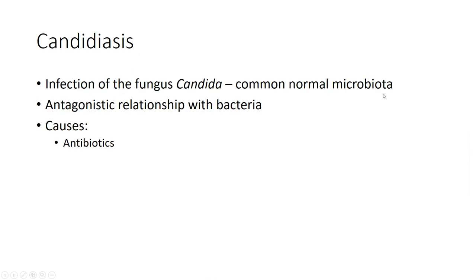Moving from viruses, let's talk about fungal infections of the reproductive system. The most common is going to be an infection of the fungus Candida. Candida albicans is a normal microbiota of the reproductive system, seen in an antagonistic relationship with bacteria — they keep each other in check. But every now and then, with something like antibiotic use, the antibiotics will kill the bacteria leading to an overgrowth of Candida, and we will see this yeast infection that is painful.